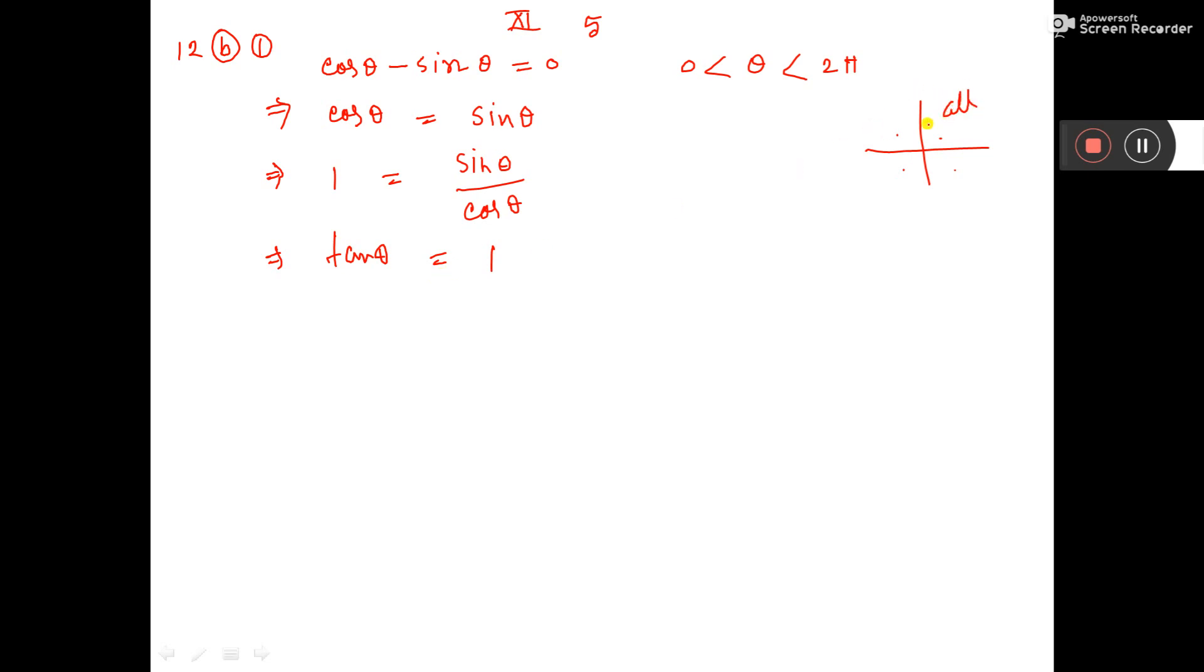Now we know all sin, tan, cos. Our value we have got, this is plus. So our angle may be either in the first quadrant or in the third quadrant. So again I am writing tan theta is equal to 1. From here I will find the value in the first quadrant, and from here I will find value in the third quadrant. This is for first quadrant, and this is for third quadrant.